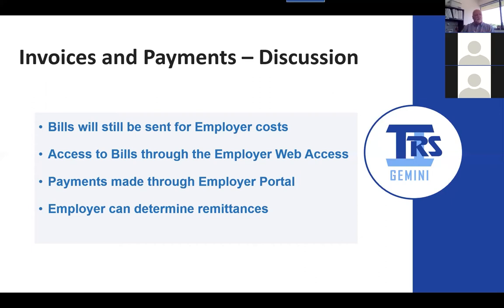Things like the 9% and THIS fund and any adjustments to earnings will have to be paid with the payment submission on the report you're working on. For others, you can pick and choose and drill down to the details if you don't want to pay the full amount. Payments are going to be made through the employer portal — no longer will you go to a third party through web access to make payments. Any payments post go-live with Gemini should be made through the employer portal.